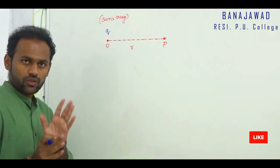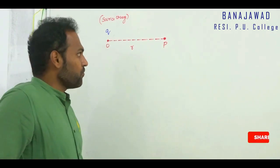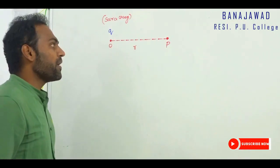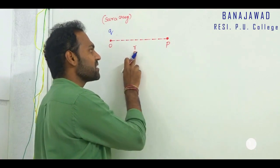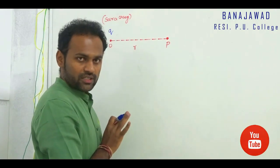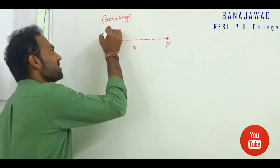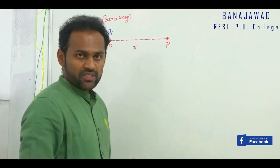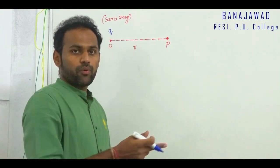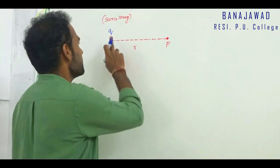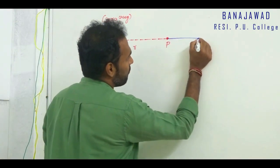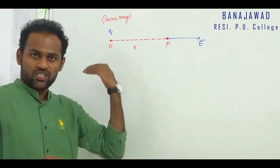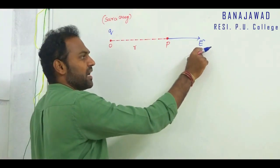This is the derivation. The main aim is to find out the electric field at point P due to the charge at point O, where P is at a distance R from the source charge. Since this is a positive charge, the direction of the electric field will be away from the positive charge and towards the negative charge. Therefore, the electric field at this point should be away from that charge — it will be in this outward direction. We have to determine this electric field now.